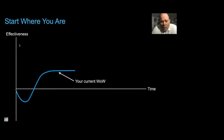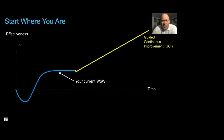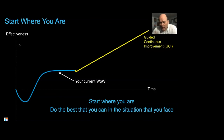My advice is: start where you are. Whatever you're currently doing — whether you're a more traditional organization or currently doing Scrum, SAFe, or LeSS — great, that's what you're doing. Whatever your current way of working is, chances are pretty good you've plateaued. And that's okay. You can adopt guided continuous improvement techniques right away. You can break out of method jail right now if you choose to. Start where you are, do the best that you can in the situation you face, and then improve in place — choose to get better at what you're currently doing.